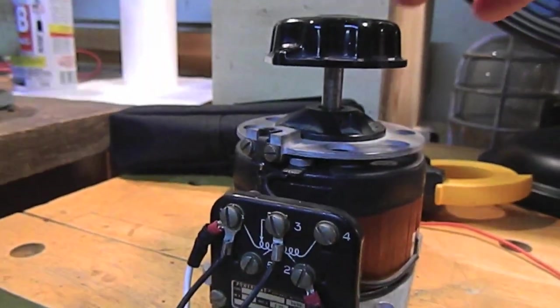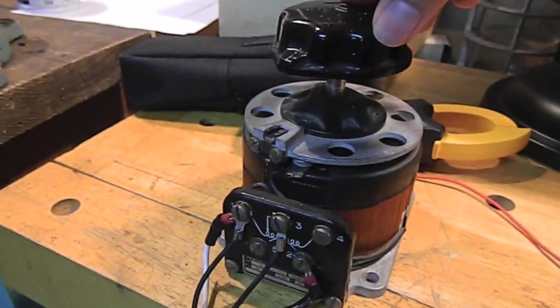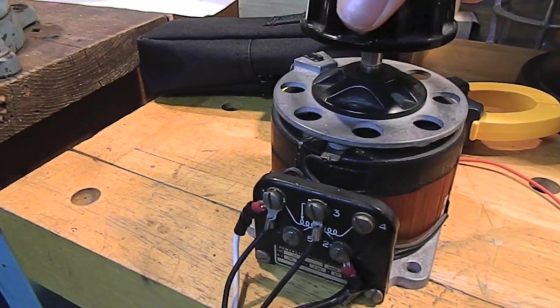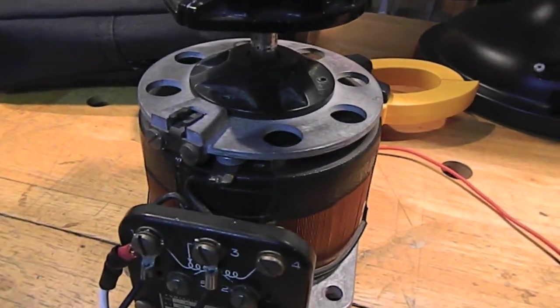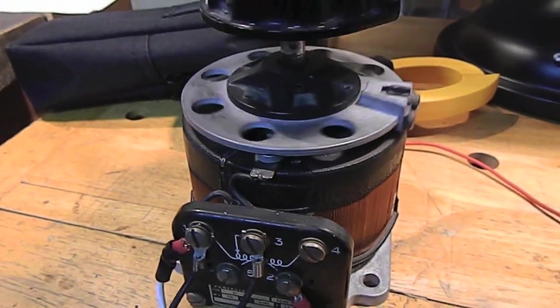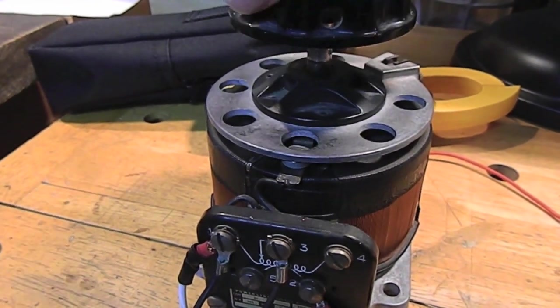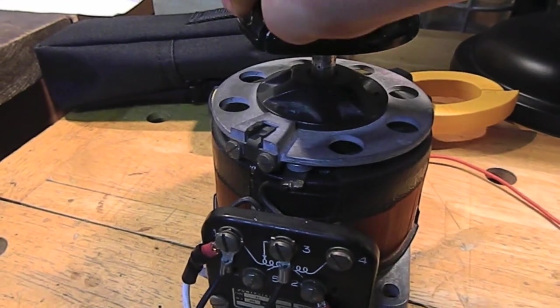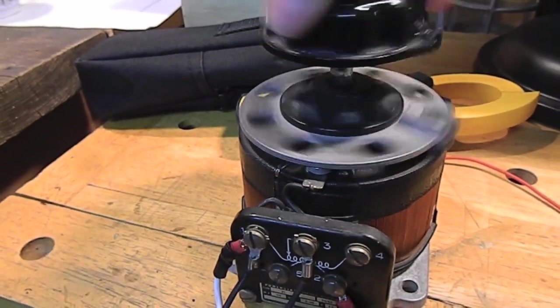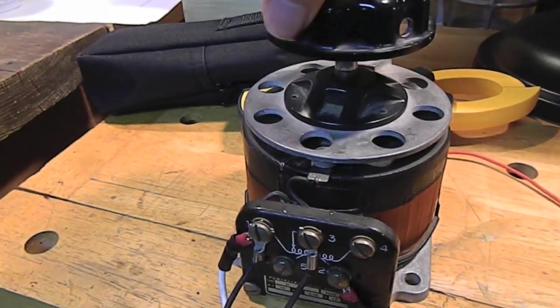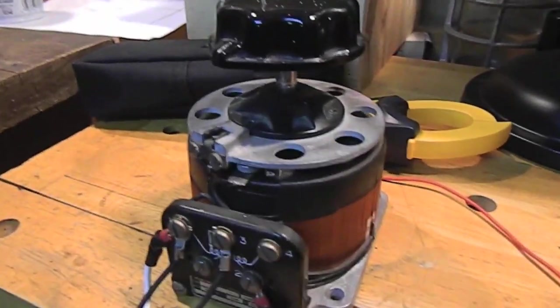So, all the variac does, it takes in the line voltage and it lets me tap off any point of it. It's a transformer, just a 1 to 1 ratio transformer. So, put in 120 volts, I should get 120 volts out. But I can tap off any point of that. Maybe I can get 12 volts or 30 volts or 50 volts or whatever. Any point. That's all it does. It lets me select what voltage I want out.